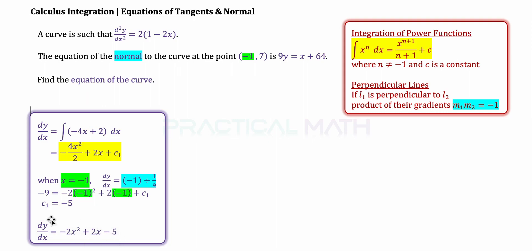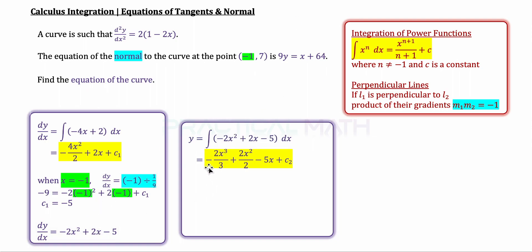Now, from our dy/dx, we can therefore find y, which is the equation of the curve. And to do so, we have to integrate another time. So, integrating your dy/dx to give us y, that will mean that we have to integrate -2x² to give us -2x³/(3).